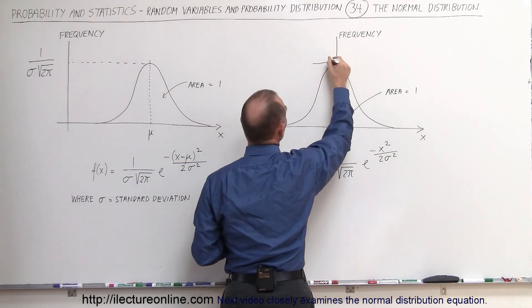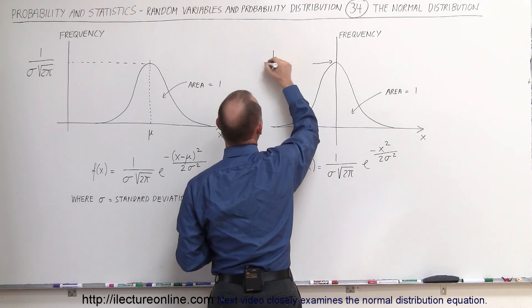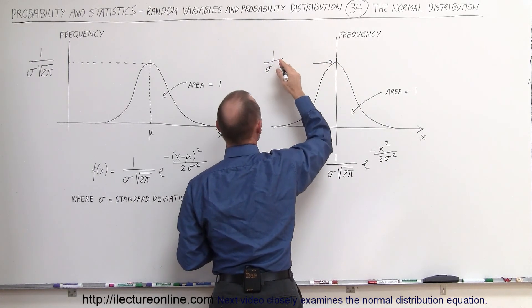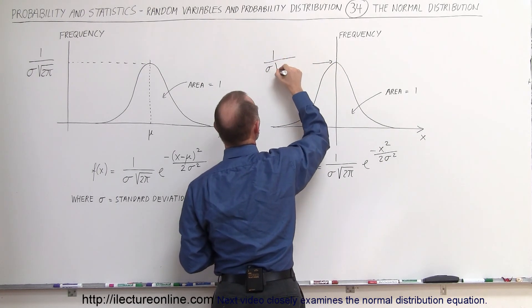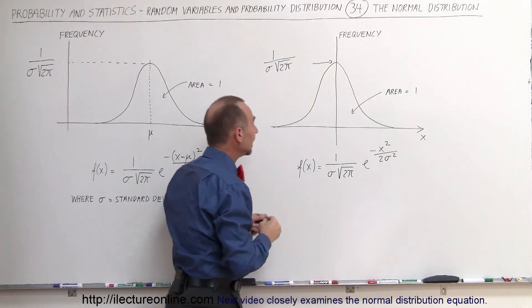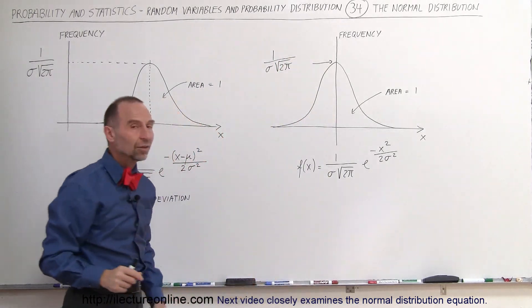The height, again, at this point, the height is still 1 over sigma, which is standard deviation times the square root of 2 pi. And again, in both cases, the area underneath is 1.